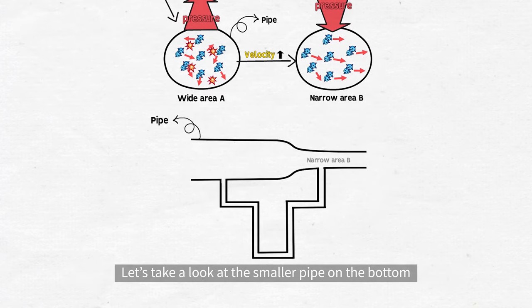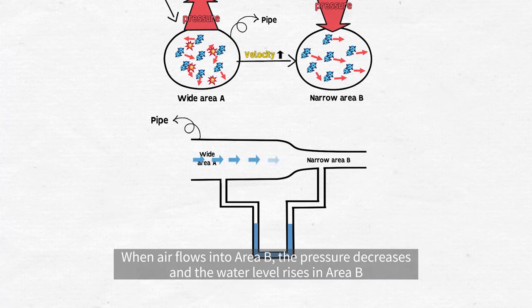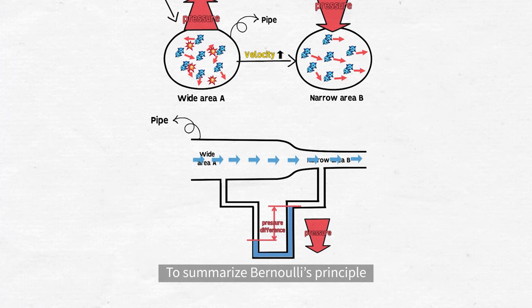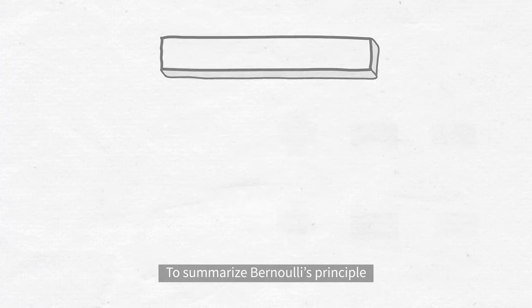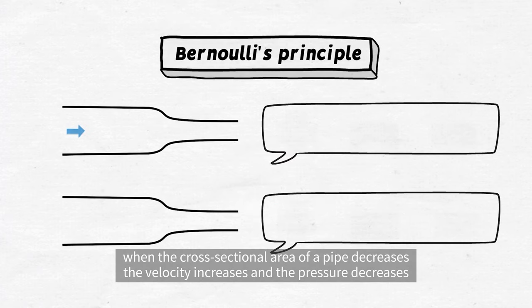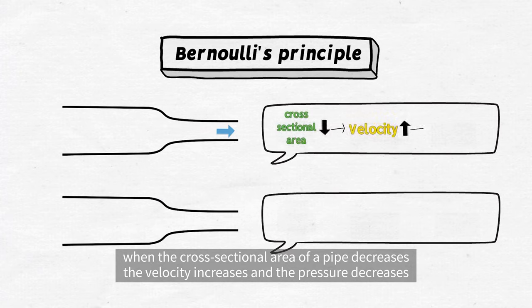Let's take a look at the smaller pipe on the bottom. When air flows into area B, the pressure decreases and the water level rises in area B. To summarize Bernoulli's principle, when the cross-sectional area of a pipe decreases, the velocity increases and the pressure decreases.